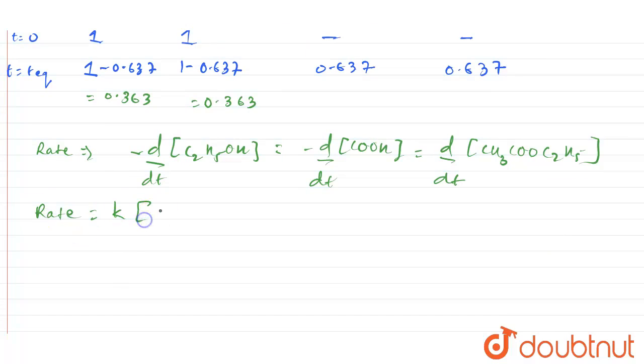And also rate can be written as rate equals K times concentration of C2H5OH times concentration of COOH. So the value for C2H5OH is 0.363 at equilibrium, so the rate value is 0.637.